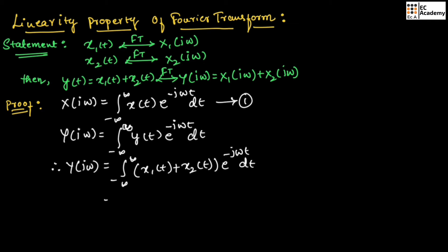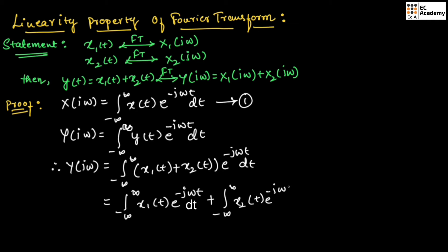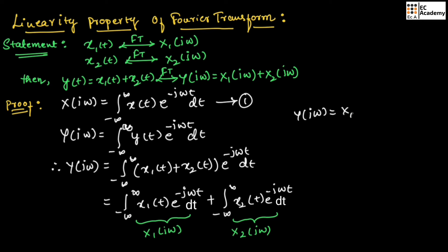Therefore, we can write Y of j omega as the integration from minus infinity to infinity of x1 of t, exponential to the power of minus j omega t, plus the integration from minus infinity to infinity of x2 of t, exponential to the power of minus j omega t. Using equation number 1, we can write the first term as X1 of j omega and the second term as X2 of j omega. Therefore, Y of j omega is equal to X1 of j omega plus X2 of j omega. This is the proof.